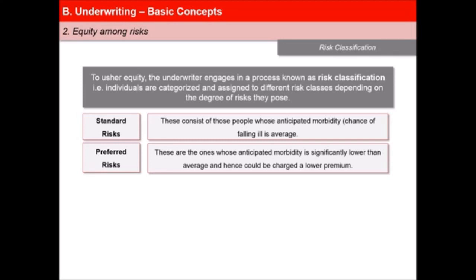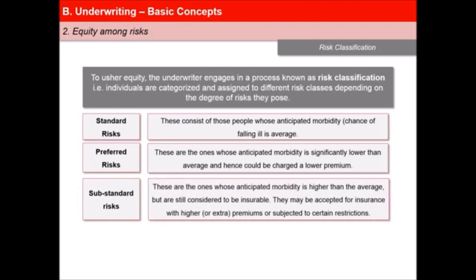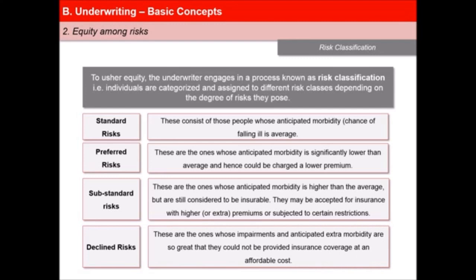Third, substandard risks: these are the ones whose anticipated morbidity is higher than the average but are still considered to be insurable. They may be accepted for insurance with higher or extra premiums subjected to certain restrictions. And fourth, declined risks: these are the ones whose impairments and anticipated extra morbidity are so great that they could not be provided insurance coverage at an affordable cost.